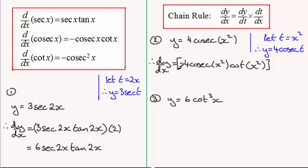And now I need to multiply it by dt by dx. And if I differentiate t with respect to x it's going to be 2x. And so cleaning this up you've got minus 4 times the 2x which will be minus 8x. And then you've just got cosec of x squared. And that's multiplied by the cot of x squared. And there you have that one.